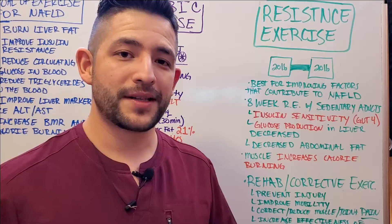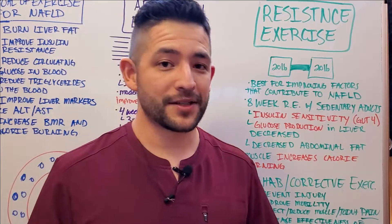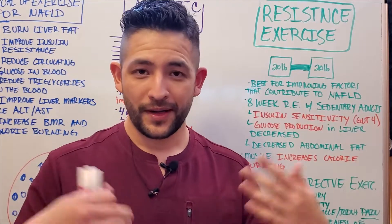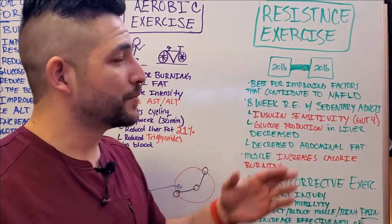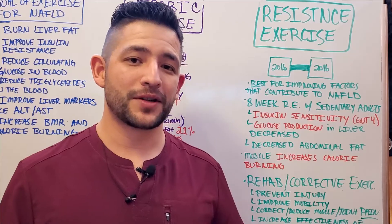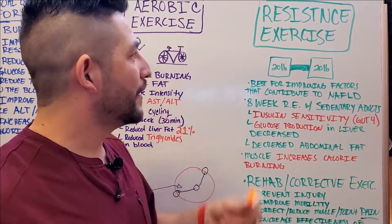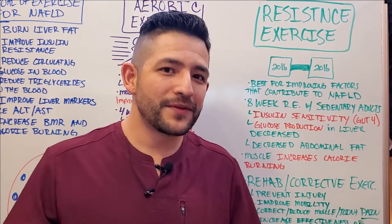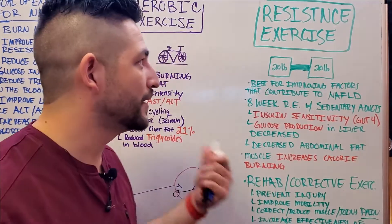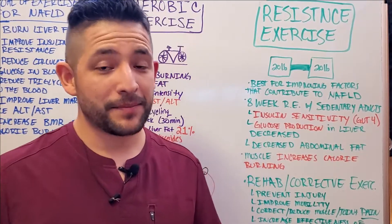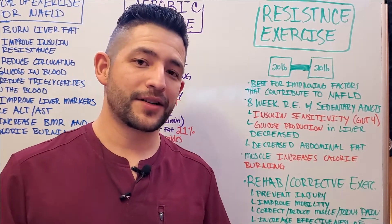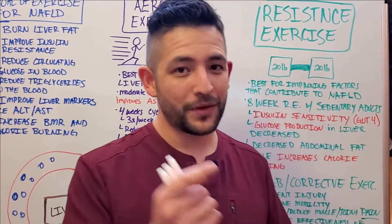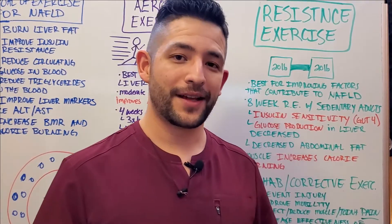If you're interested in me putting together a basic corrective exercise routine, let me know in the comments below. Hopefully you learned something today about how to best incorporate aerobic exercises and resistance training into your treatment plan for reversing fatty liver disease. Research shows that all you need to start seeing improvement is 60 to 120 minutes of exercise per week — about 15 minutes a day. Combining this with proper nutrition and strategies like intermittent fasting can further boost results. Make sure to like the video, subscribe, and leave any questions in the comments. Talk to you next time.